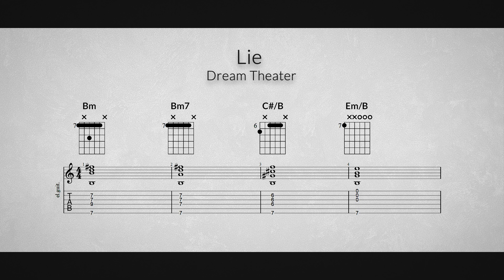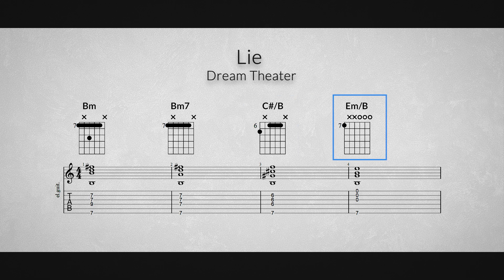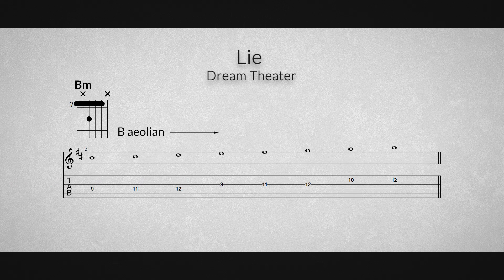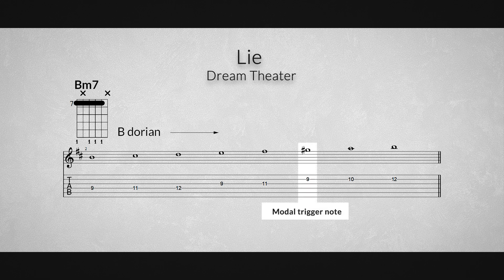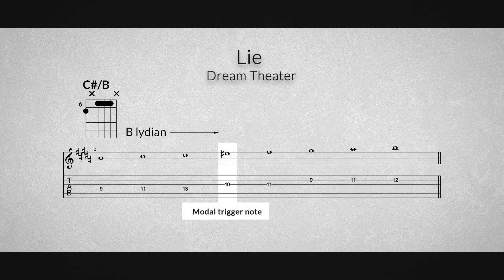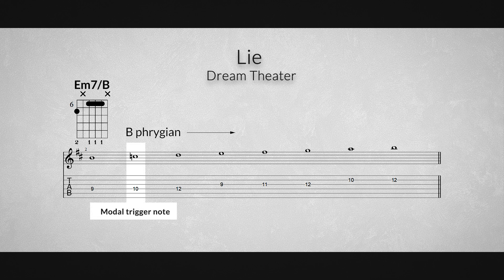Another example is the song 'Lie' by Dream Theater. In this song we find the progression centered around the note B, which serves as the pitch axis. The chords used are B minor, B minor 7, C sharp with a B in the bass (or B major 9, 13, sharp 11), and E minor slash B (E minor with a B in the bass). The scales used are B Aeolian over B minor, B Dorian over B minor 7, B Lydian over C sharp 7 with a B in the bass, and B Phrygian over E minor with a B in the bass.